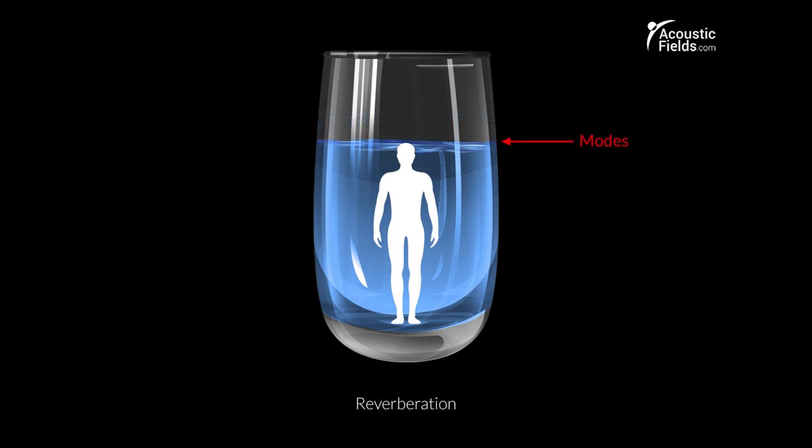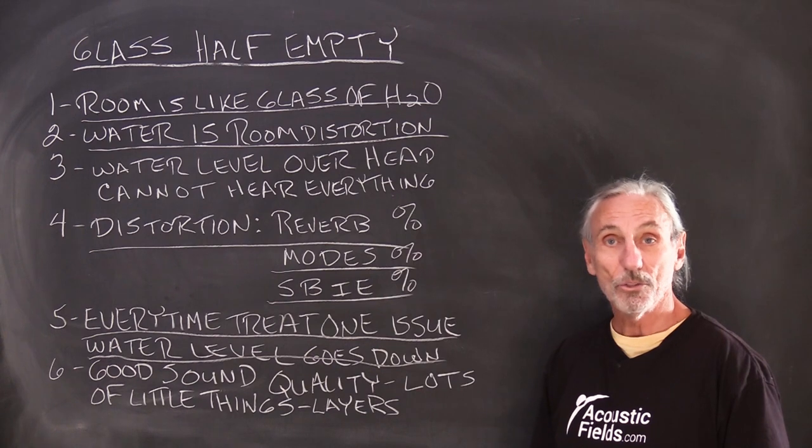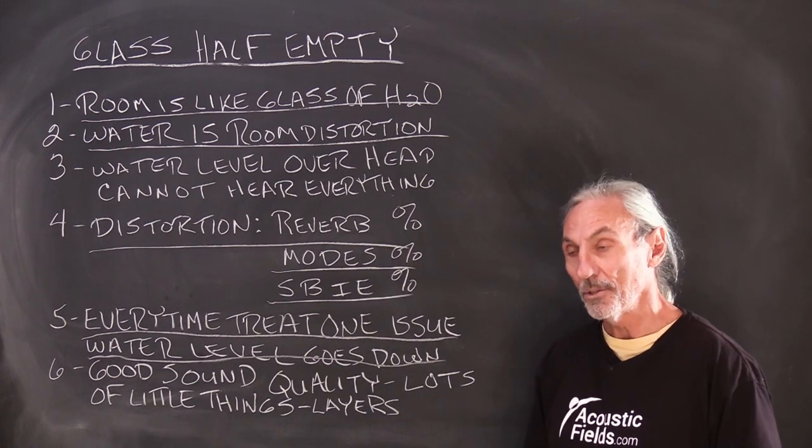So every time we treat one issue, the water level goes down a little bit. But you have to look at the hierarchy of order and the percentage of influence each one of these distortions has and you have to treat those accordingly.